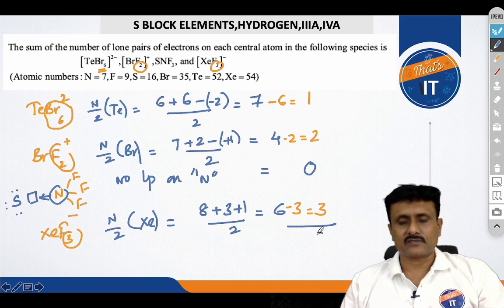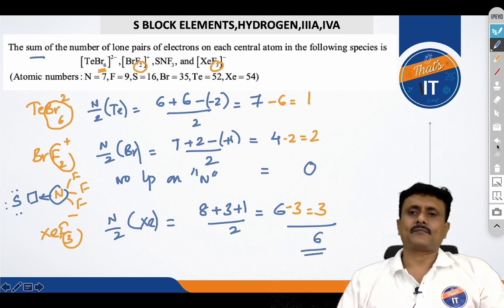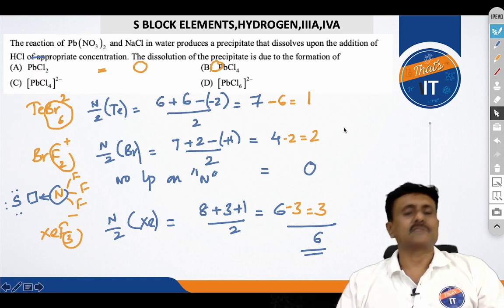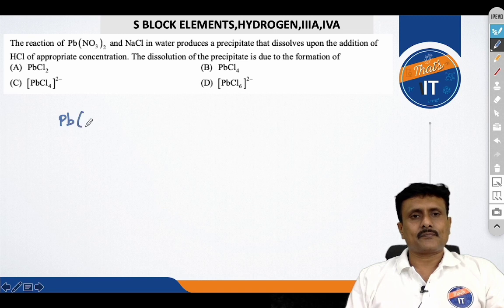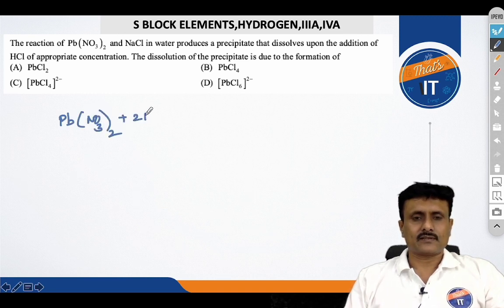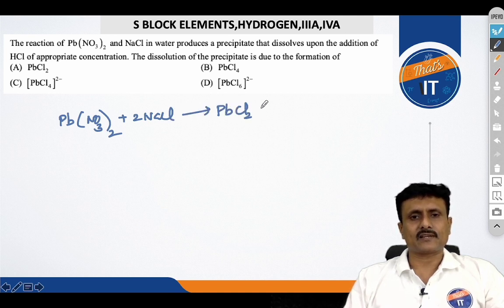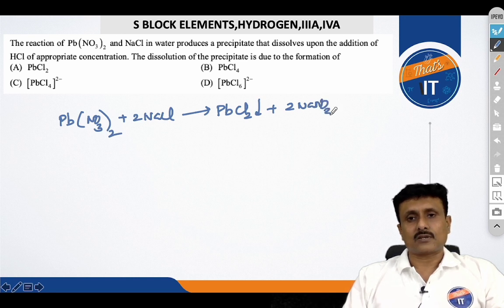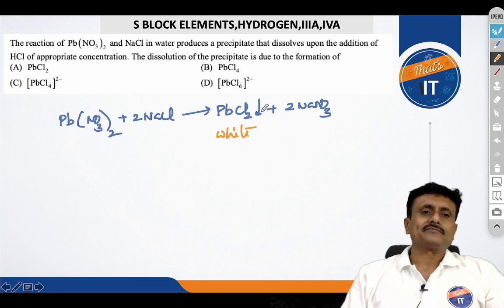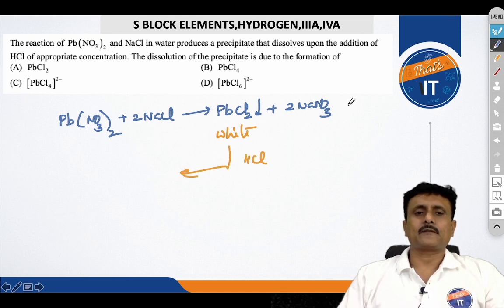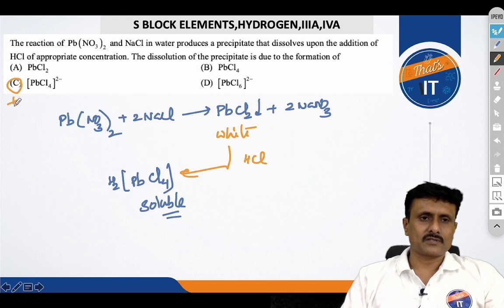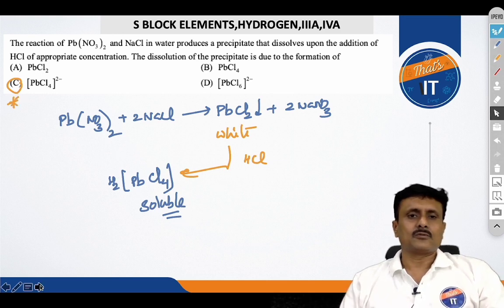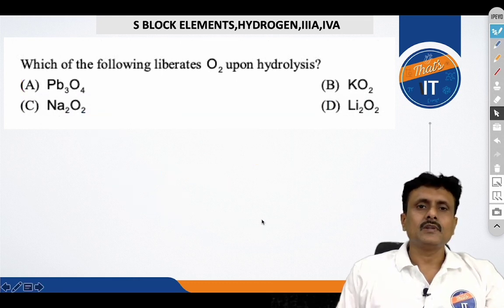Very important technique, I have released one video on this also. One minute short video, please follow it. Now, you see, the reaction of lead nitrate with NaCl gives rise to double displacement reaction. You know that PbCl2 is soluble in hot water. That means, it is insoluble in cold water. However, when you are adding excess of HCl, you will be getting H2PbCl4. So, this is what is making it soluble. So, right answer for this question will be option C. This is a regularly asked question. So, go through carefully, very easy question asked.